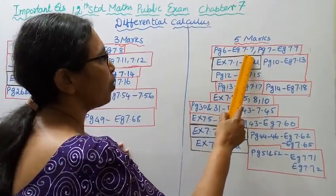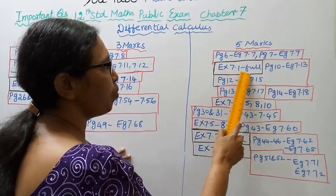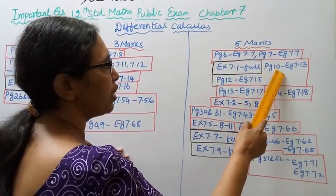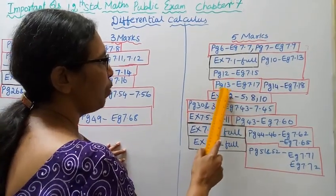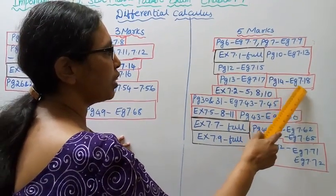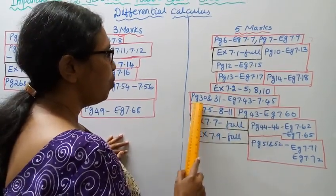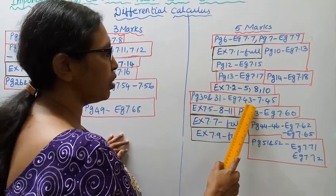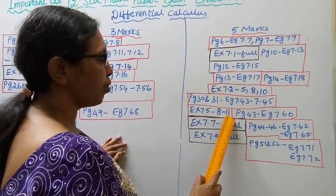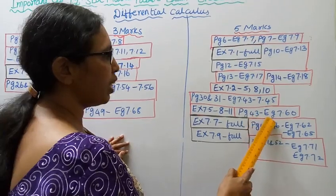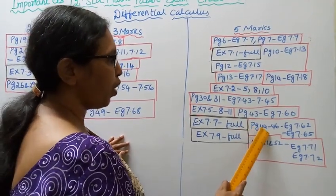For 5 marks: page 6 example 7.7, page 7 example 7.9. Exercise 7.1 full practice. Page 10: example 7.13. Page 12: example 7.15. Page 13: example 7.17. Page 14: example 7.18. Exercise 7.2 — sums 5, 8, 10. Page 30-31: example 7.43, 7.44, 7.45. Exercise 7.5 — sums 8, 9, 10, 11. Page 43: example 7.60. Exercise 7.7 full — look at it.